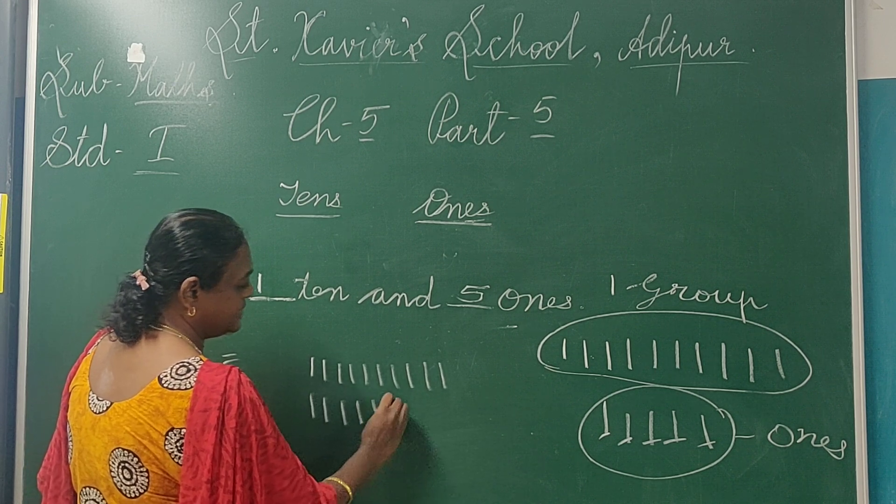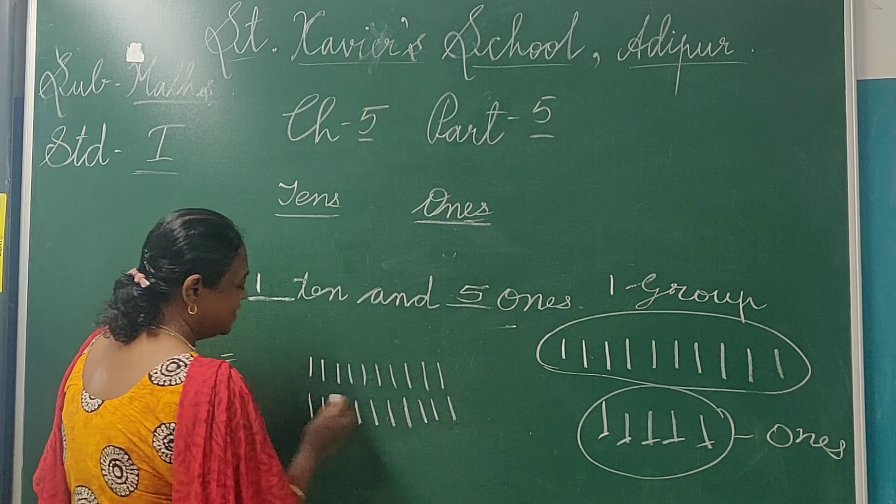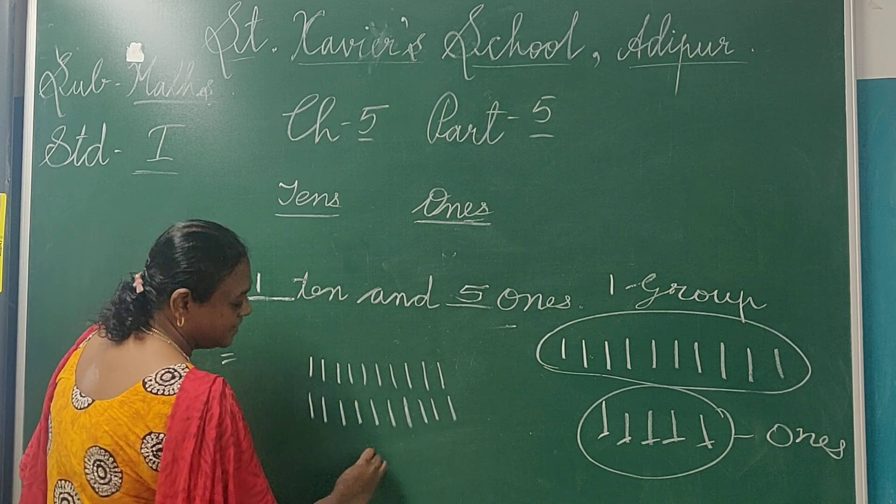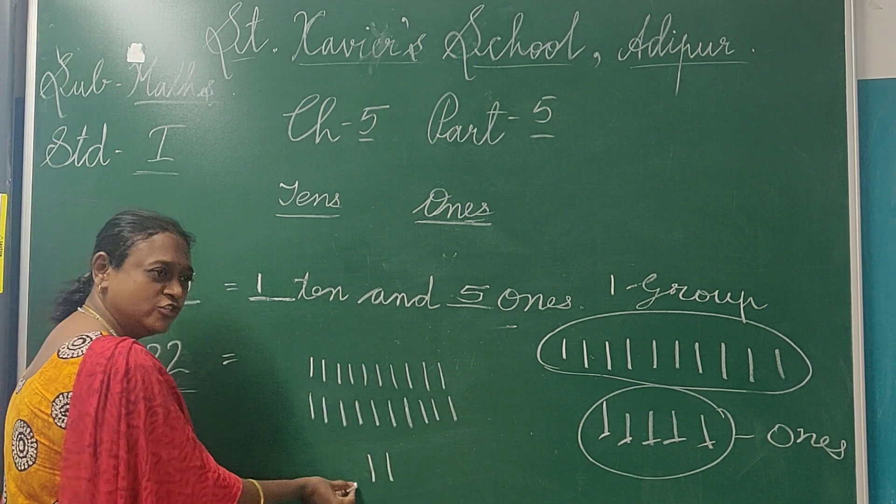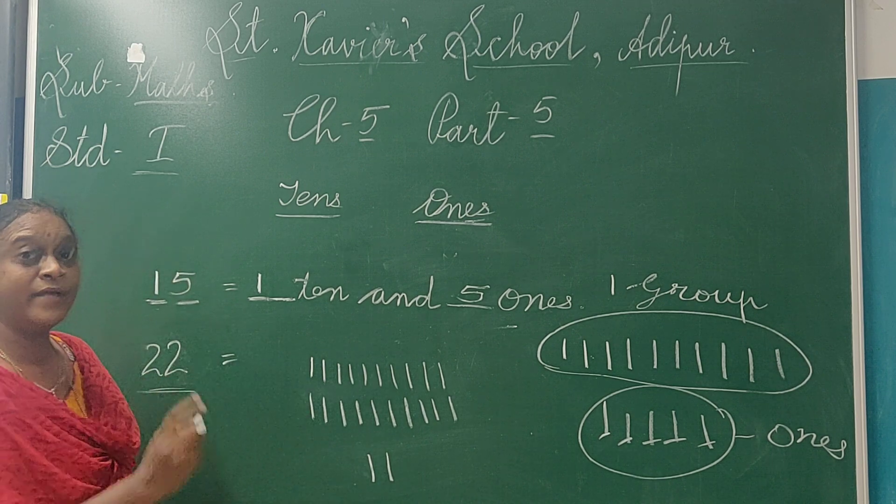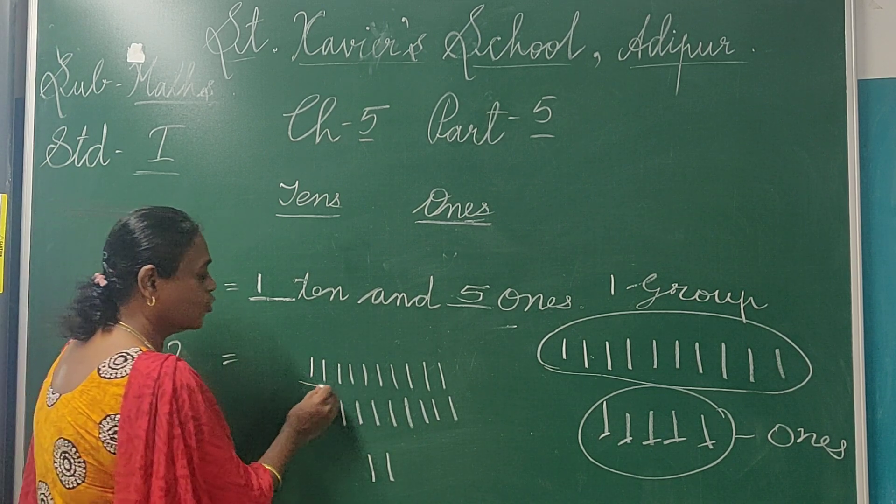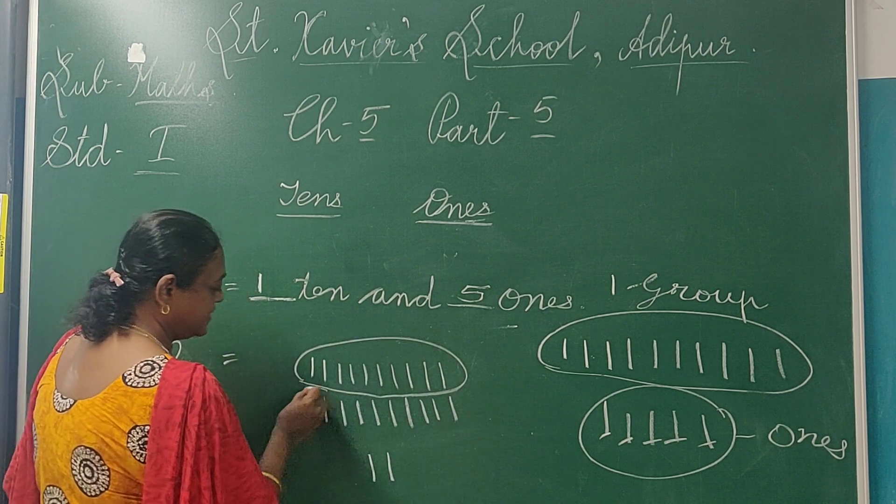Now we are having 1 and 2. Now this is 10, 20 and 2. So we are having how many groups? We are having 2 groups of 10. We have to always see the groups.